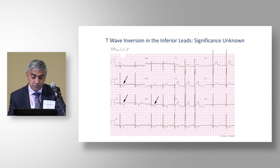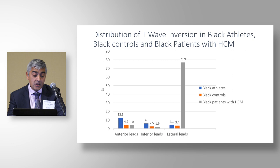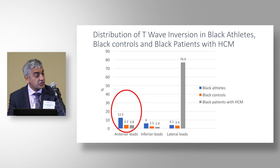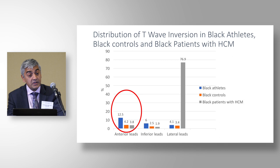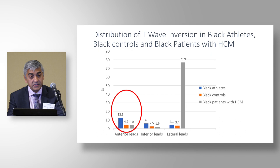Comparing T-wave inversion in black athletes, black controls, and black patients with hypertrophic cardiomyopathy, anterior T-wave inversion is much more common in black athletes than in black controls or black patients with hypertrophic cardiomyopathy. Detailed genetic studies with large gene panels have not identified cardiomyopathy in these individuals. It is for this reason that anterior T-wave inversion in black athletes is considered normal in the international recommendations.